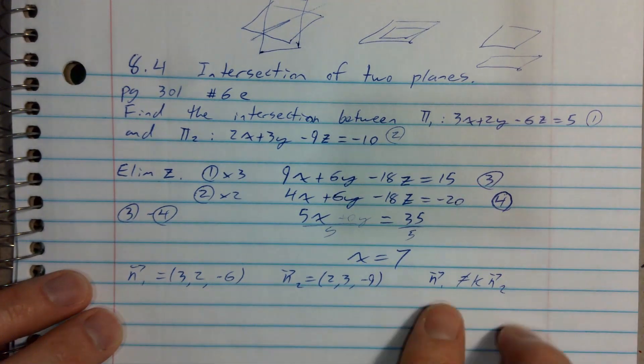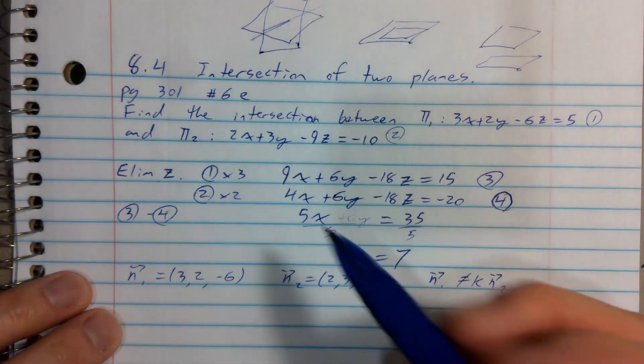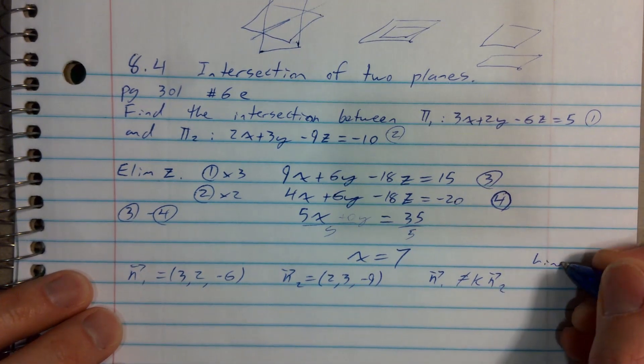Unless you're asked to, you don't have to prove this. And that means that I'm, let's say, 95.3 percent sure that there should be a line of intersection.